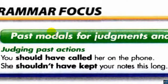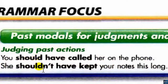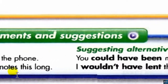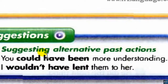We use modals for judgments and suggestions. For judgments: 'You should have called her on the phone.' 'You shouldn't have kept your notes this long.' The structure is: subject + should/shouldn't + have + past participle. 'Call' — past participle 'called.' 'Keep' — past participle 'kept.' For giving suggestions about alternative past actions: